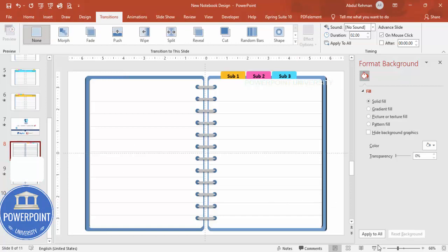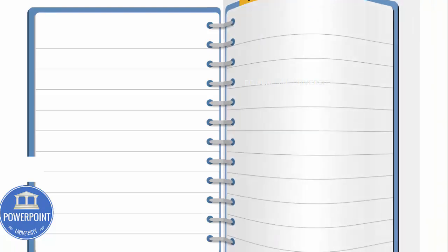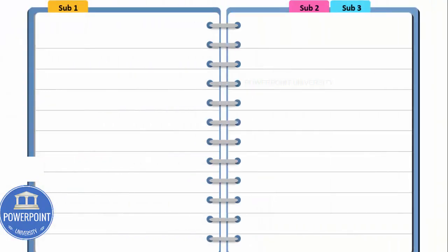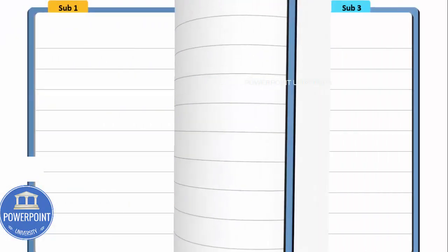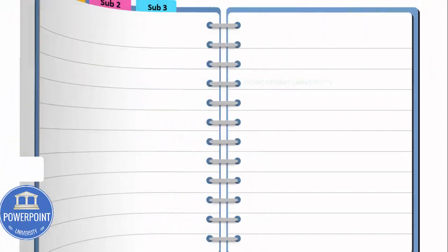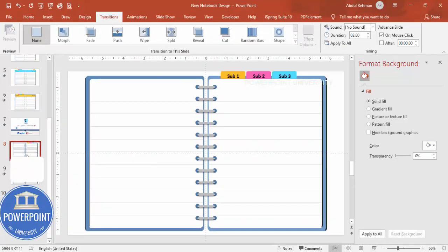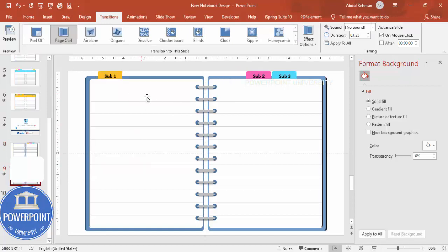Now with Subject One, Subject Two, and Subject Three tabs set up, when I click the page turns: it becomes Subject One, then Subject Two, then Subject Three. The page curl transition works correctly. To give some differentiation, you can add different color formatting to each page.